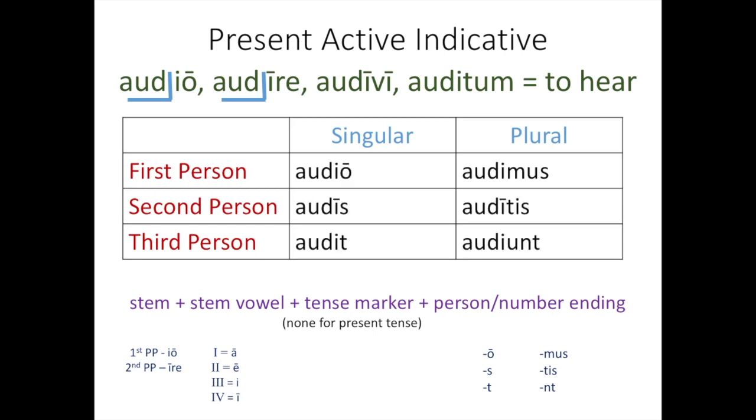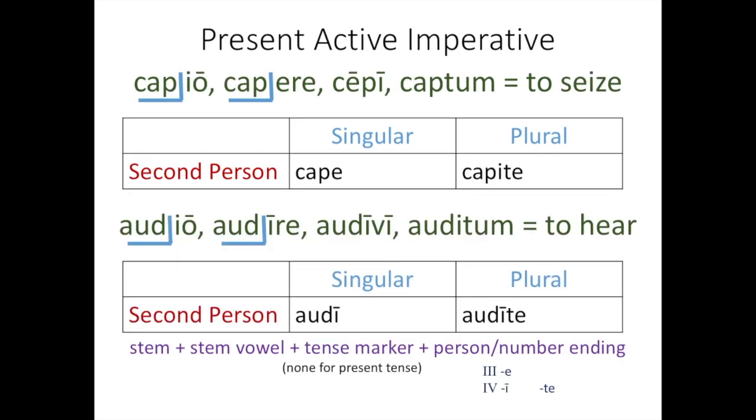Hopefully this is what you got. Now let's go on to our imperatives. Now these are only second person singular and plural, and I've given them to you already. These are the ones that order other people to do things.